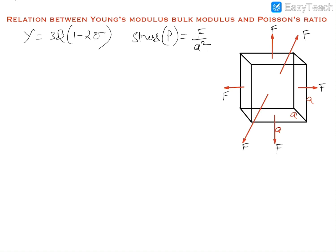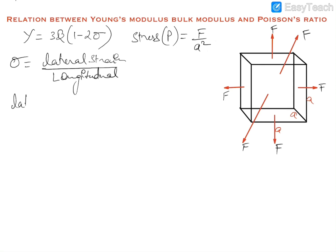We know that Poisson's ratio is equal to lateral strain upon longitudinal strain, as discussed in the previous video. We can also write that lateral strain is equal to Poisson's ratio into longitudinal strain.